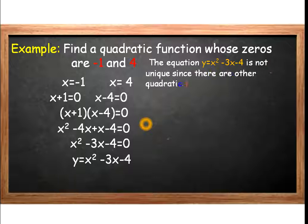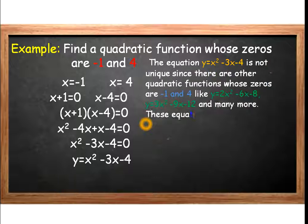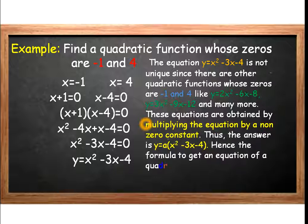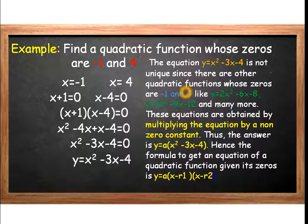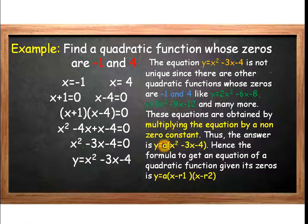We can note that the equation y is equal to x squared minus 3x minus 4 is not unique, since there are other quadratic functions whose zeros are negative 1 and 4 — like y is equal to 2x squared minus 6x minus 8, y is equal to 3x squared minus 9x minus 12, and many other functions. These equations are obtained by multiplying the equation by a non-zero constant. Thus, the answer is y is equal to a times the quantity x squared minus 3x minus 4.